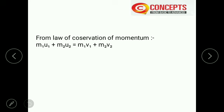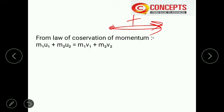Before going to the numericals, we will discuss some concepts. You have to remember this: if an object is moving in the positive x direction and you are taking that direction as positive, you have to take the opposite direction as negative. Velocity is a vector quantity, so if you take one direction as positive, you must take the opposite direction as negative.